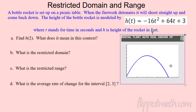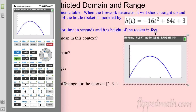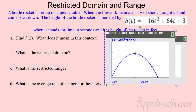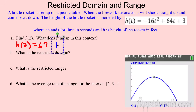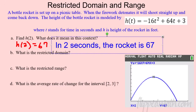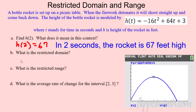To find h(2), hit Trace and enter 2 — the calculator shows 67. So h(2) = 67 feet. In context, this means: at 2 seconds, the rocket is 67 feet in the air. We're labeling the domain and range and interpreting what the function values mean in the real-world context of the problem.